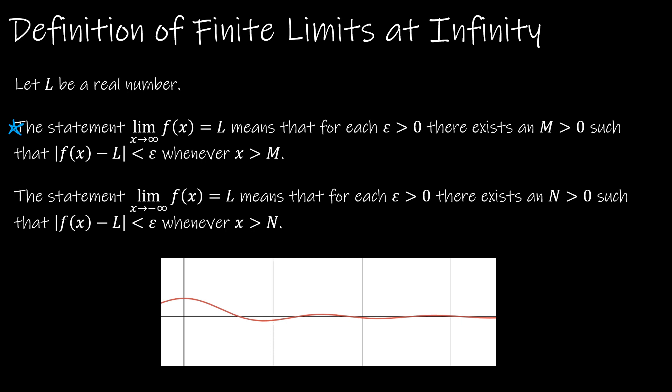It means that for each epsilon greater than zero, there exists an M greater than zero such that the absolute value of f(x) minus L is less than epsilon whenever x is greater than M. So what does that mean? Basically what it means is this. As we can see, we've got this function here and it's approaching the line y equals L. It's oscillating on both sides of it, but it's getting closer and closer to L. And as we approach infinity, it's just going to keep getting closer.